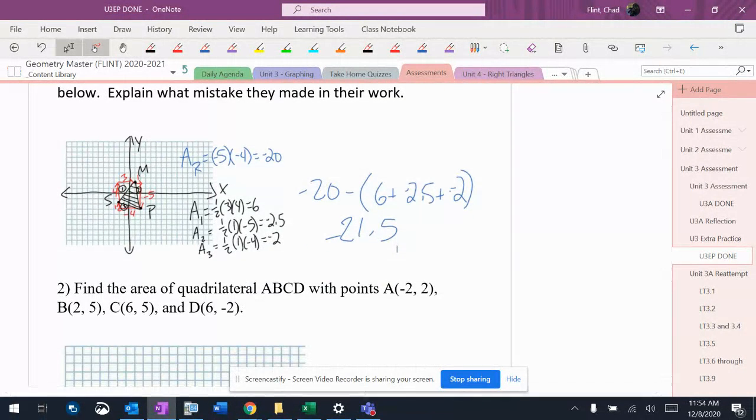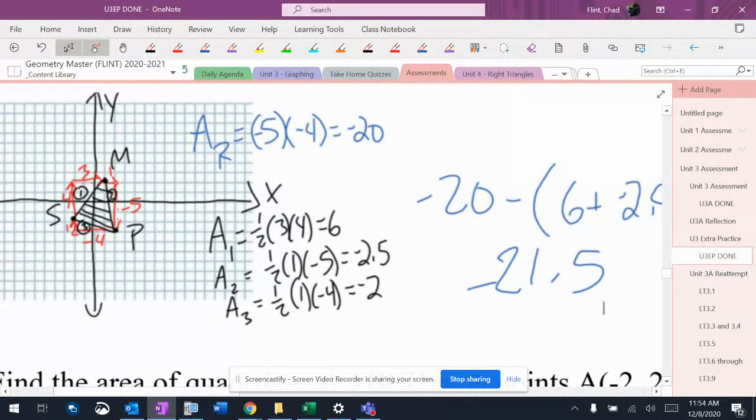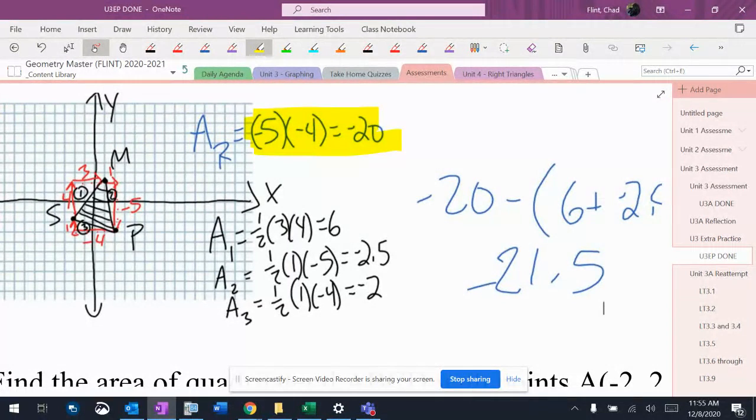So it says explain what mistake they made in their work. So number one, if you notice this, this was actually an accident. That should have been positive 20 when you did that right there. The rest of the numbers are all correct. That wasn't the mistake I'm looking for, but you definitely could list that as a mistake.